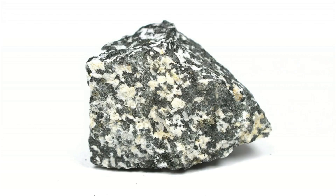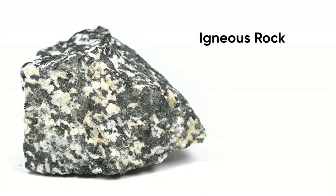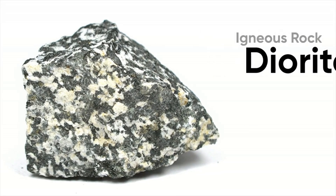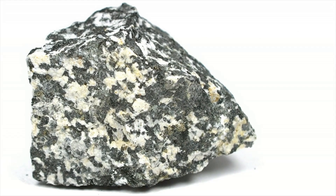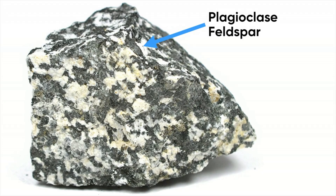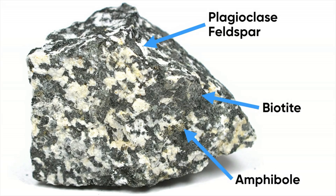Let's take a look at a rock. This is an igneous rock known as diorite. What probably jumps out at you are all the different speckles of color — the dark grays, the whites, the orange. Those are actual mineral crystals. The rock diorite contains mineral crystals of plagioclase feldspar, biotite mica, amphibole, quartz, and others. So minerals are what make up the rocks on the surface of the earth.